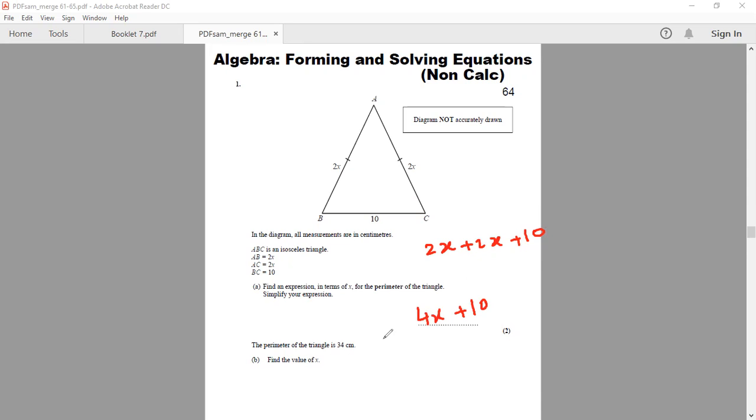So here we can form an equation by using the perimeter of the triangle which is given as an algebraic expression and the fact that its perimeter is 34 centimeters. We're going to write the equation 4X plus 10 equals 34. And we can solve this equation by doing the inverse operation.